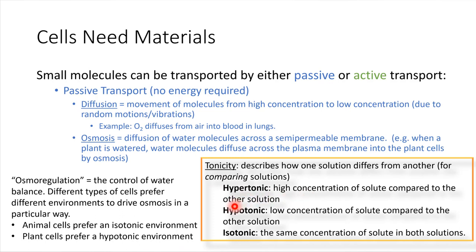Hypotonic is just the opposite — it refers to the solution that has a lower concentration of solute. Comparing our two beakers again, one has sugar dissolved in it and the other has just pure water. The hypotonic solution would be the pure water, because it's lower in sugar content than the other solution. Finally, isotonic refers to two solutions that have the same concentration.